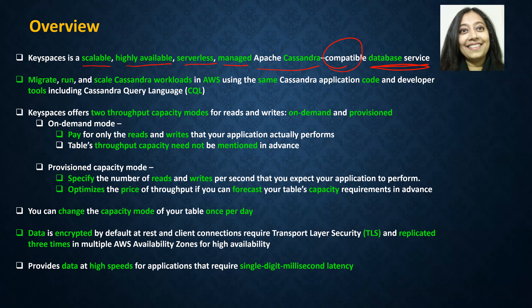Most of the services on cloud are scalable and highly available. This is a serverless service, meaning no servers, nothing to patch, nothing to take care of, no addition of disk, no maintenance of servers. You don't have to worry about storage space or disk running out. And it's a managed service that means it does everything on its own — you just have to get your data and work with it.